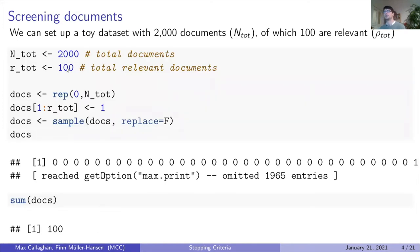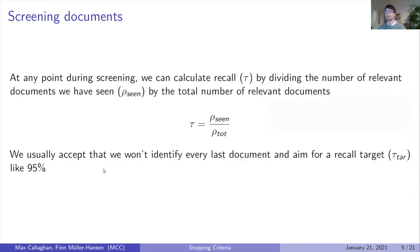In this presentation I want to make a concrete example using some R code. We set up a toy dataset with 2000 documents of which 100 are relevant, represented as a vector of zeros and ones. Zero is irrelevant and one is a relevant document. The parameter we're most interested in is recall—the number of relevant documents we've seen divided by the total number of relevant documents. Often we have a target level of recall, something like 95 percent.